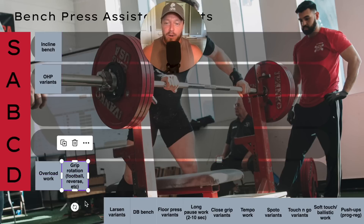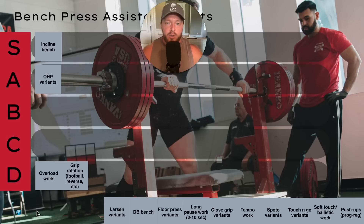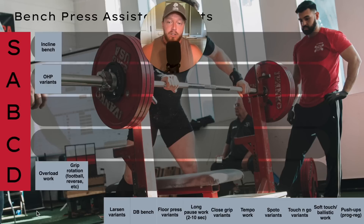Next one also D tier — grip rotation work. When I say grip rotation, I mean things like the football bar bench or reverse grip bench — where you're changing the angle of your grip, not wider or narrower. This is just so non-specific to me. Football bar benching for instance requires so much wrist stability when you go heavy that it's just not going to have much carryover. That said, just because it's D tier doesn't mean I never use it — I have given both of these exercises to people, but just not regularly.